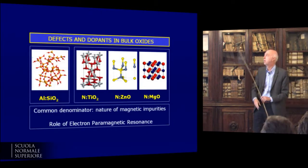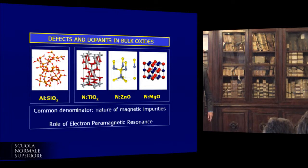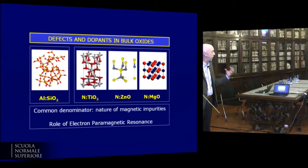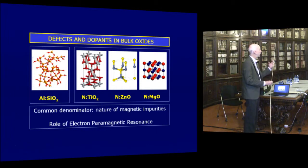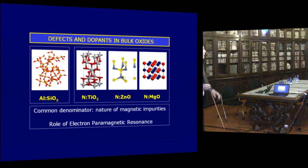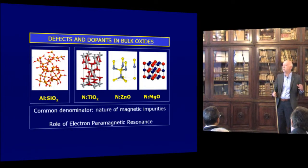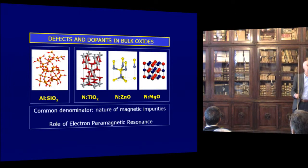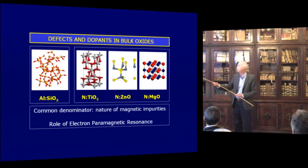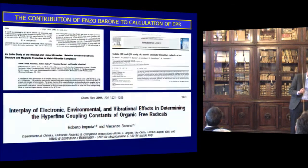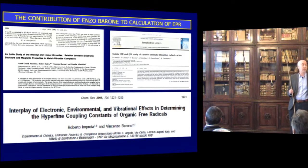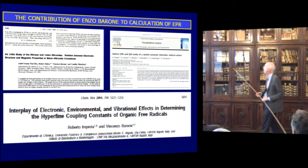This is just an outline of what I want to cover. I will first discuss briefly the case of an aluminum impurity in silicon dioxide, and then I will discuss the case of nitrogen dopants in three materials: titanium dioxide, zinc oxide, and magnesium oxide. The common denominator is that when you introduce these kinds of impurities in a solid material, you also introduce magnetic impurities — magnetic states. We want to describe these magnetic states and compare theoretical results with experiment, where electron paramagnetic resonance or electron spin resonance plays a very important role.